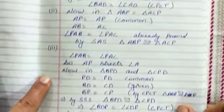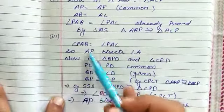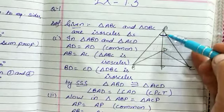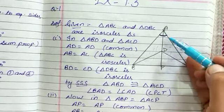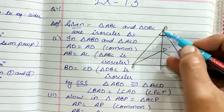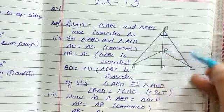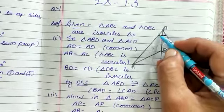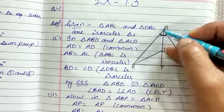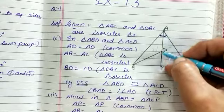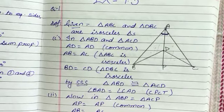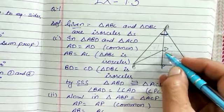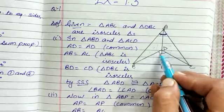Now the third part. We have to prove that AP bisects angle A, meaning angle A is divided into two equal parts. From the congruence of triangle ABD and triangle ACD, these angles are equal — it means line AP divides the whole angle A into two equal parts. We also have to prove that AP bisects angle D.